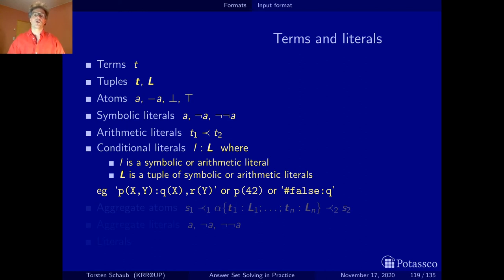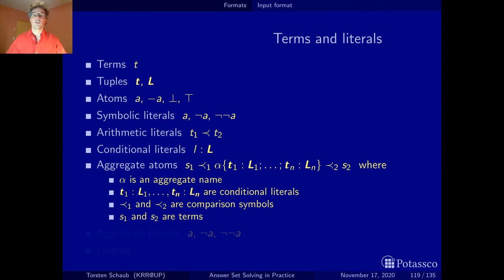Now let's get a bit more picky and look at how aggregates are exactly dealt with. Aggregate atoms have this form, where the alpha here is an aggregate name like sum or count, and then we have these conditional literals where the t here is a tuple—not strictly speaking a literal but a conditional term tuple. This is a term tuple, this is a literal tuple, and we have several of them. Then we have comparison symbols here and here, and they may actually be different. Finally, we have terms as t1 and t2 as both ends to represent the bounds.